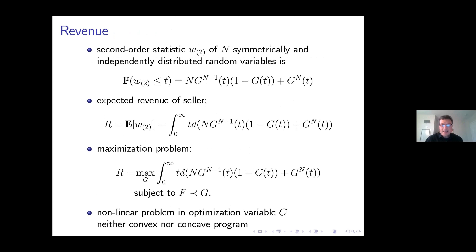We are focused on the second order statistic of these n symmetric and independently distributed random variables — not of the original distribution F, but of the chosen distribution G that possibly compresses the information. I can rewrite the expected revenue of the seller in terms of this integral, where the object is to choose a distribution G that is a mean preserving contraction of F. That's the maximization problem that we're going to try to solve.